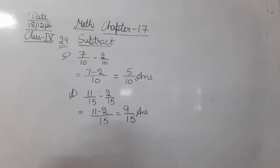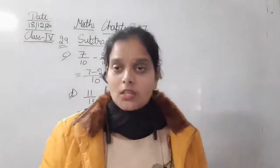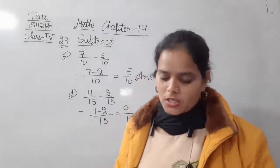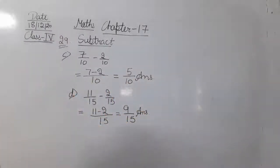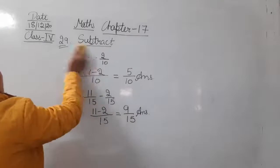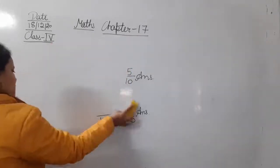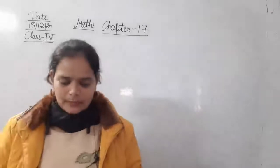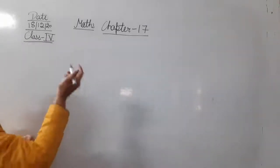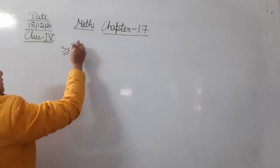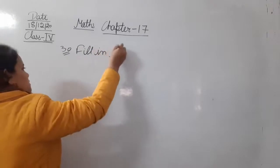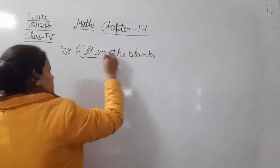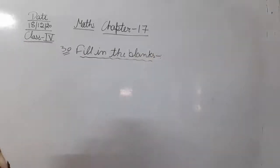So that was the last part from question number 29. This is just simple subtraction — with a common denominator, you simply subtract the numerators. Moving next to question number 30. Now we will move to question number 30. The question is: fill in the blanks.